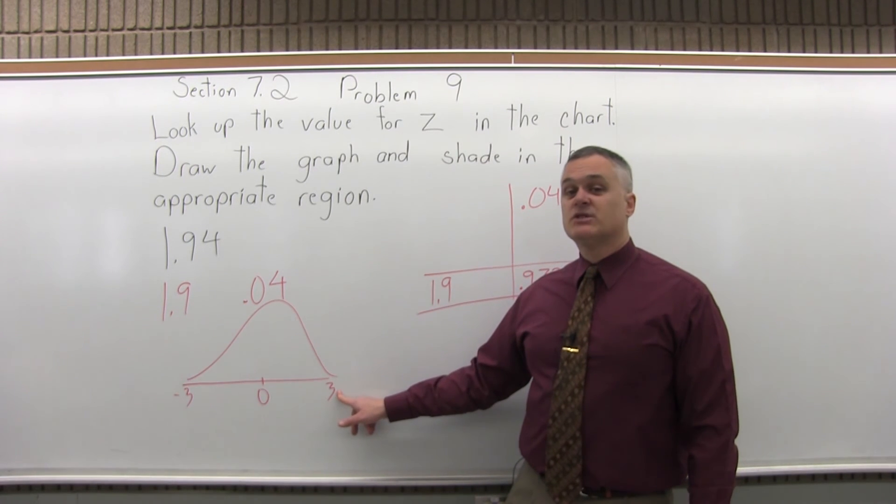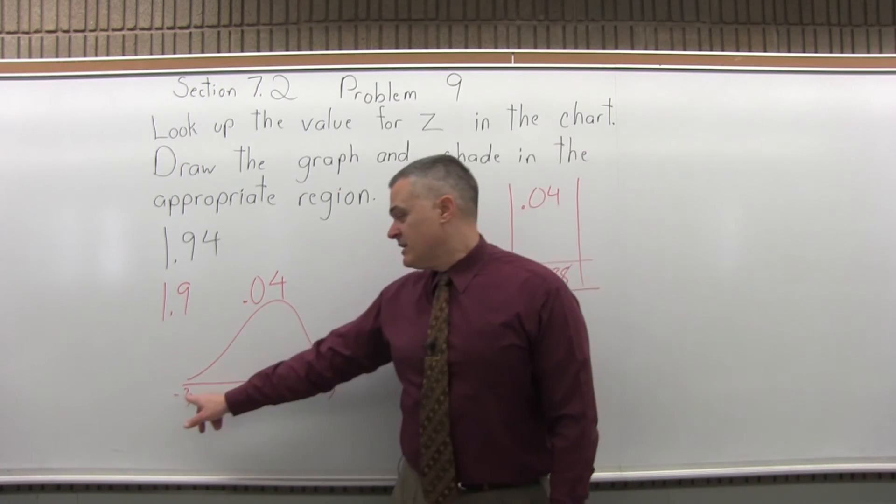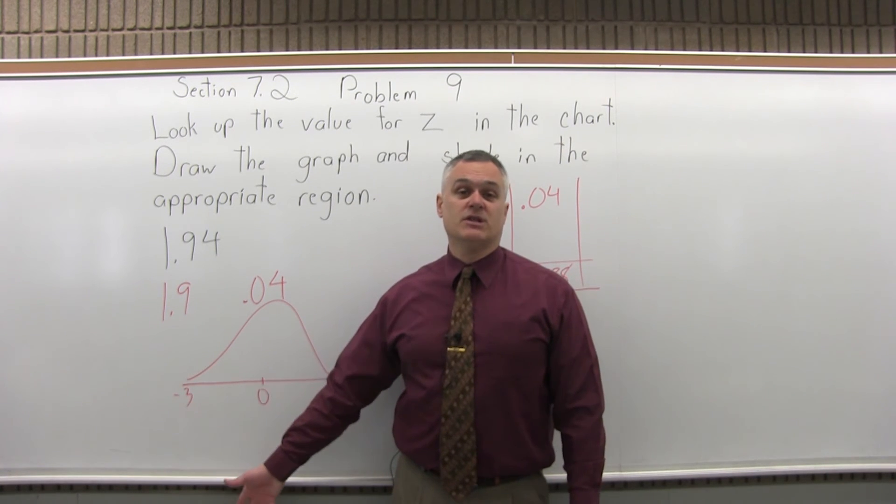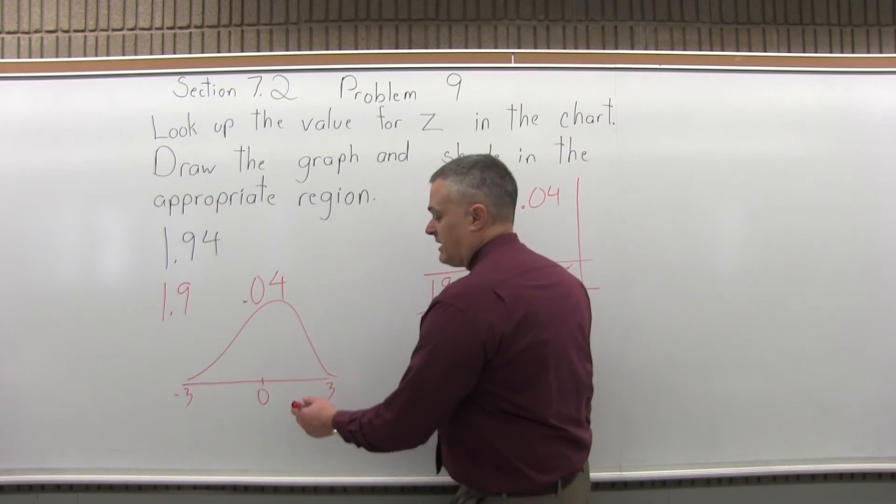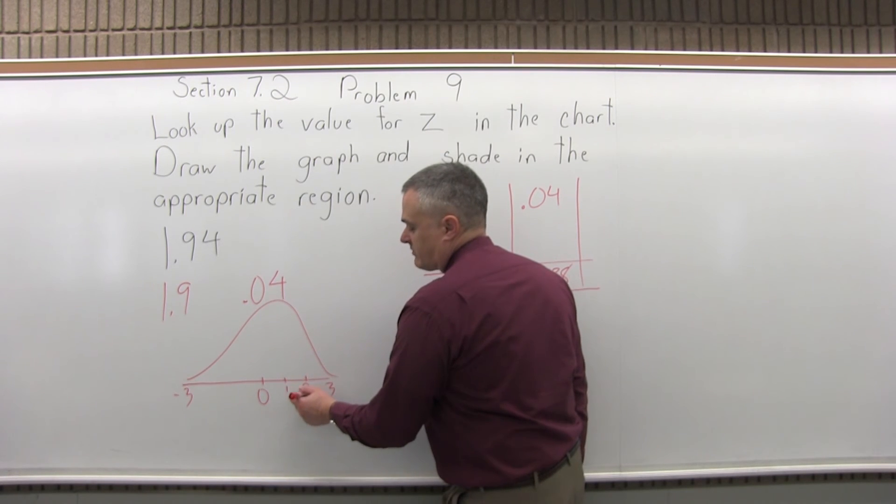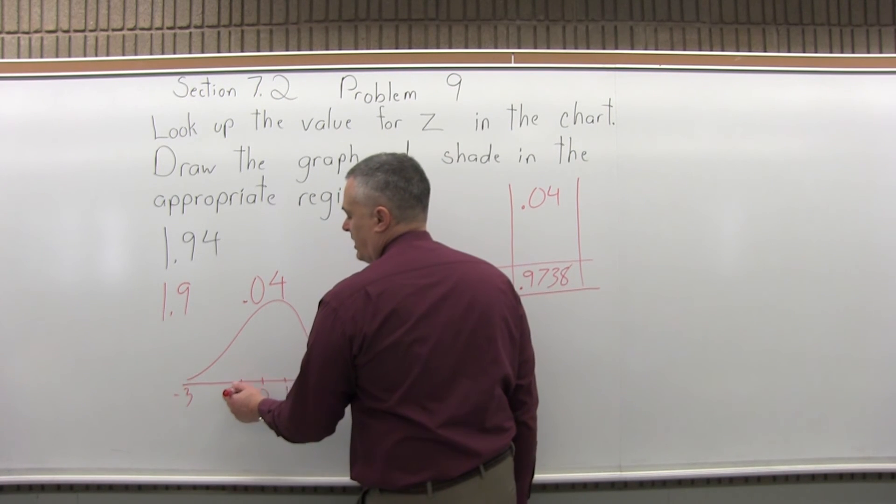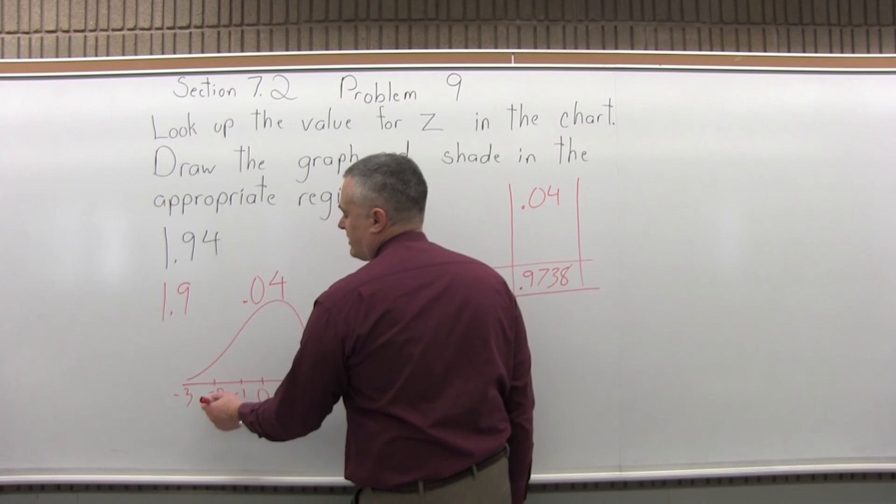3 on the right, 3 standard deviations larger than the average value. Negative 3 on the left, 3 standard deviations smaller than the average value. And then on the positive side you can split off positive 1, positive 2, positive 3. On the negative side, negative 1, negative 2, negative 3.